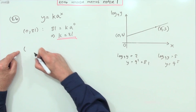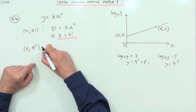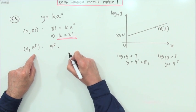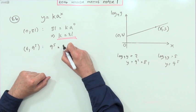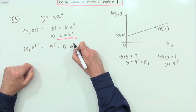So when I come to the next one, which is to put in the point 6, and I'll just call that 9 to the 5 just now, then I'll have 9 to the power 5 equals, and I know what k is, it's 81 times a to the power 6.